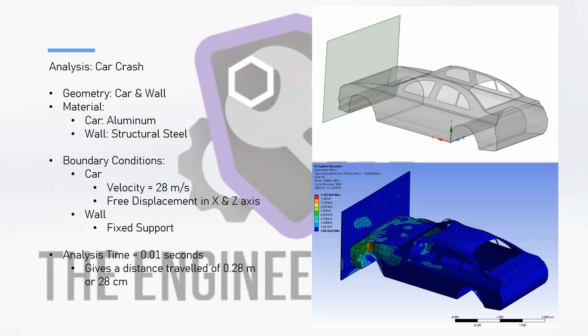We are going to run this analysis for 0.01 seconds, which at 28 meters per second gives a distance traveled of 0.28 meters or 28 centimeters. The analysis time is short because we are using the explicit dynamics module, which captures complex and highly non-linear behavior such as deformations, high plasticity, and high-speed impact events that induce stress waves and rapid changes in momentum. In explicit dynamics, the time integration scheme is generally more straightforward and requires less computational power. Using an implicit method would require an iterative solver that is much more time-consuming, computationally intensive, and requires more user input for stability and convergence. Therefore, we will use explicit dynamics.